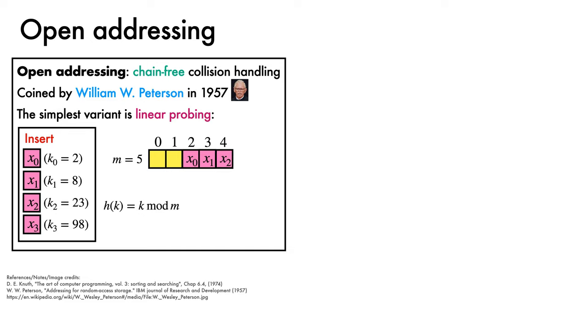Finally, object x3 with key 98 also maps to slot 3. It's full, so it checks slot 4. This too is full, so it wraps around and checks slot 0. This is free, so it is inserted there. Search follows the same scheme. To find the object associated with key 98, it is hashed to slot 3, and then checks consecutive slots until the object, in this case x3, is found, or until it hits an empty slot, in which case the search returns unsuccessfully.